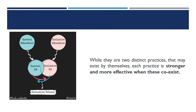While special education and inclusive education are distinct practices that may exist by themselves, each practice is actually stronger and more effective when both co-exist. If a child is ready to be mainstreamed, he can be mainstreamed in society. However, the mainstreaming may not be permanent, depending on the need of the child with disability.